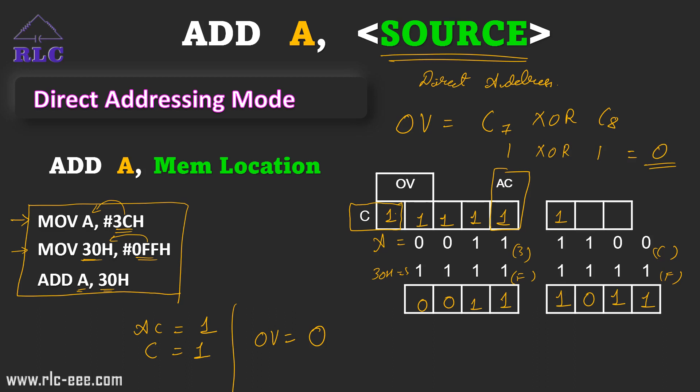Checking the parity flag: counting the number of 1s in the accumulator after the addition — we have 1, 2, 3, 4, 5 — so five 1s are stored in the accumulator. Since five is an odd number of 1s, the parity flag is set to 1.